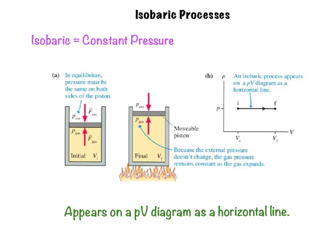So on a PV diagram, an isobaric process appears as a horizontal line because we've got constant pressure, our volume changes. Again, the arrow is telling us we're going in this direction, so this is what we'd call an isobaric expansion. If the gas process were going the other direction, we're taking heat energy out, causing that gas to compress, then we'd call this an isobaric compression.